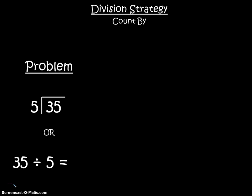Division is the same, just backwards. Instead of knowing how many groups and how many are in each group, we know how many we have altogether and we know how many are in each group.